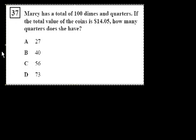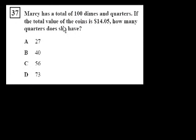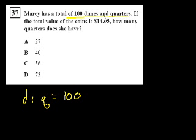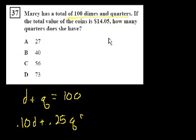Problem 37. Marcy has a total of 100 dimes and quarters. If the total value of the coins is $14.05, how many quarters does she have? Let's say that D is the number of dimes and Q is the number of quarters. The number of dimes plus the number of quarters equals 100 coins. And then the total value of the coins is 0.10 times the number of dimes plus 0.25 times the number of quarters, and that equals $14.05. They say how many quarters does she have, so we just have to solve for Q.